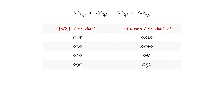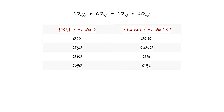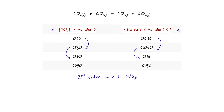Moving on to my second example: the reaction between nitrogen dioxide and carbon monoxide. In this set of results the experiment has been done four times. In each case the starting concentration of NO2 has been changed and we have results for the initial rate of reaction. We can see that doubling the concentration of NO2 quadruples the initial rate. Again, doubling the concentration from 0.3 to 0.6 quadruples the rate. So this reaction is second order with respect to NO2.